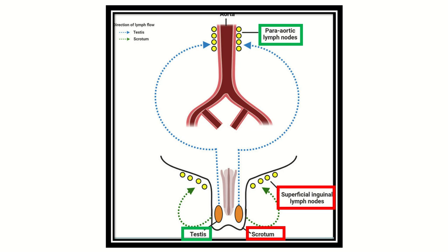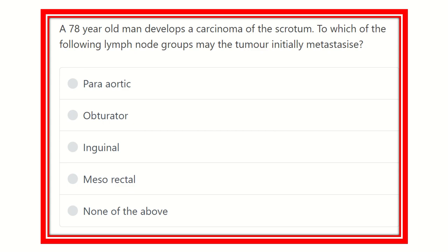Hello everyone, welcome to another question and answer session for MRC. A 78-year-old man develops a carcinoma of the scrotum. To which of the following lymph node groups may the tumor initially metastasize?